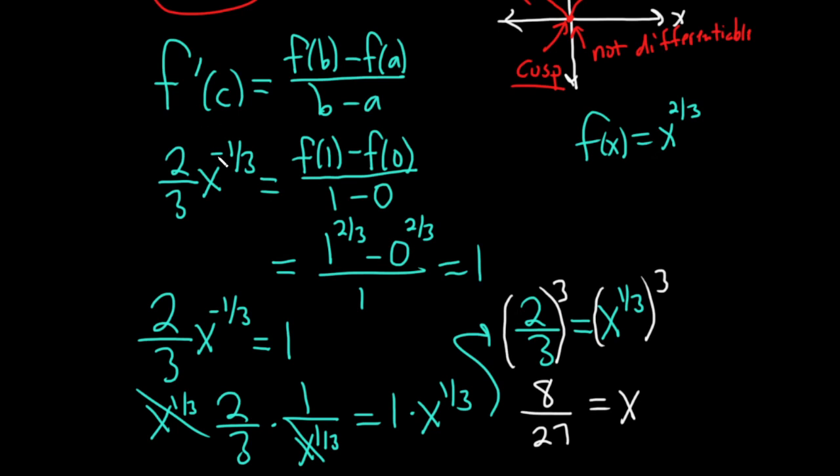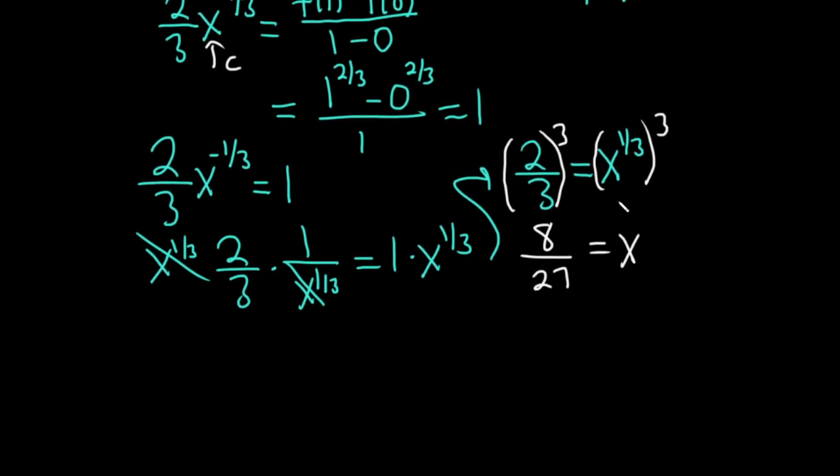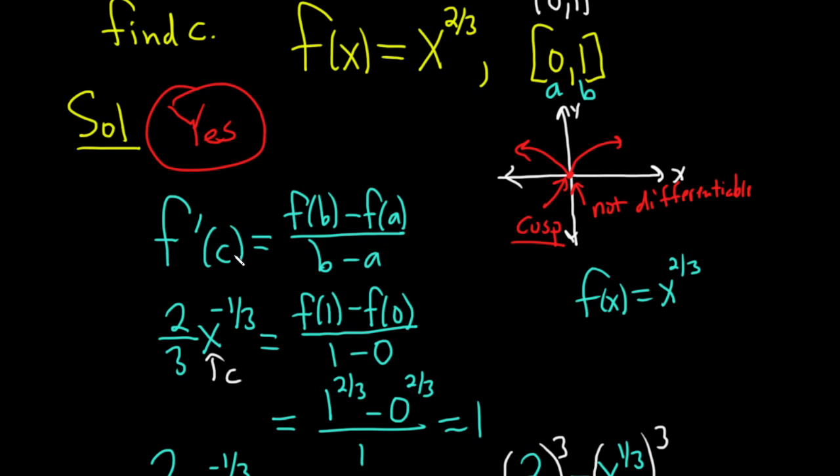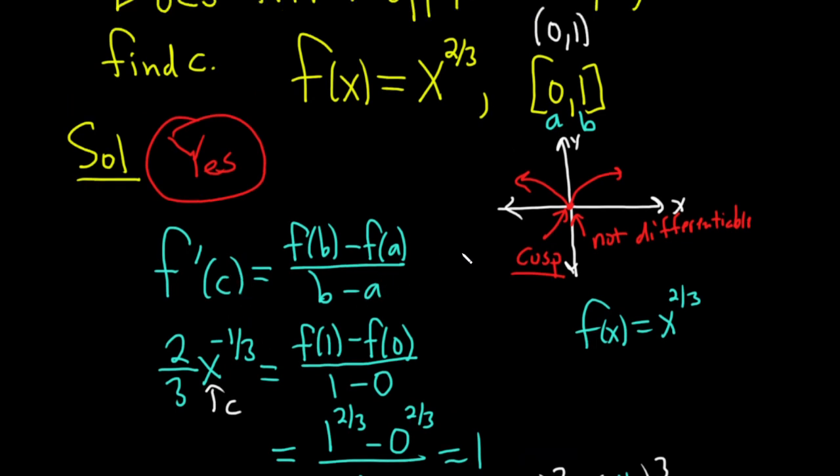I actually called it x here, even though this should be c here. But I just called it x. So no big deal. I'll go back and call it c. c is equal to eight over 27. I usually never use c in these problems. I just always use x. It doesn't really matter. Just be aware that it is called c inside the theorem.